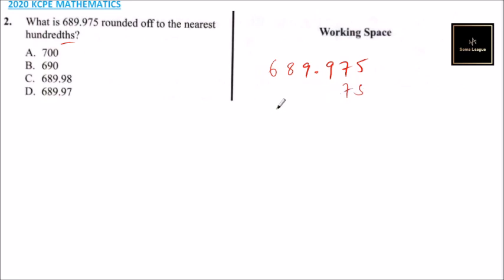So our number should be 689.98. That is what you get when you round this number to the nearest hundredth. So checking from your answers, A is not correct, B is not correct, C is correct, and D is not correct.